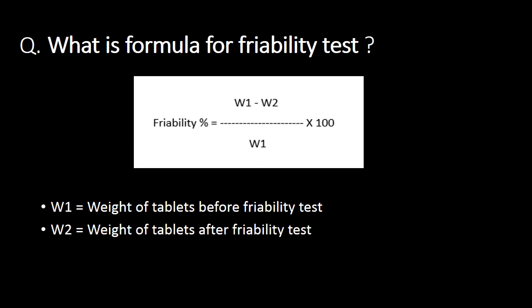Next question: what is the formula for friability test? Percent friability = (W1 − W2) / W1 × 100, where W1 is the weight of tablets before the friability test and W2 is the weight of tablets after the friability test.